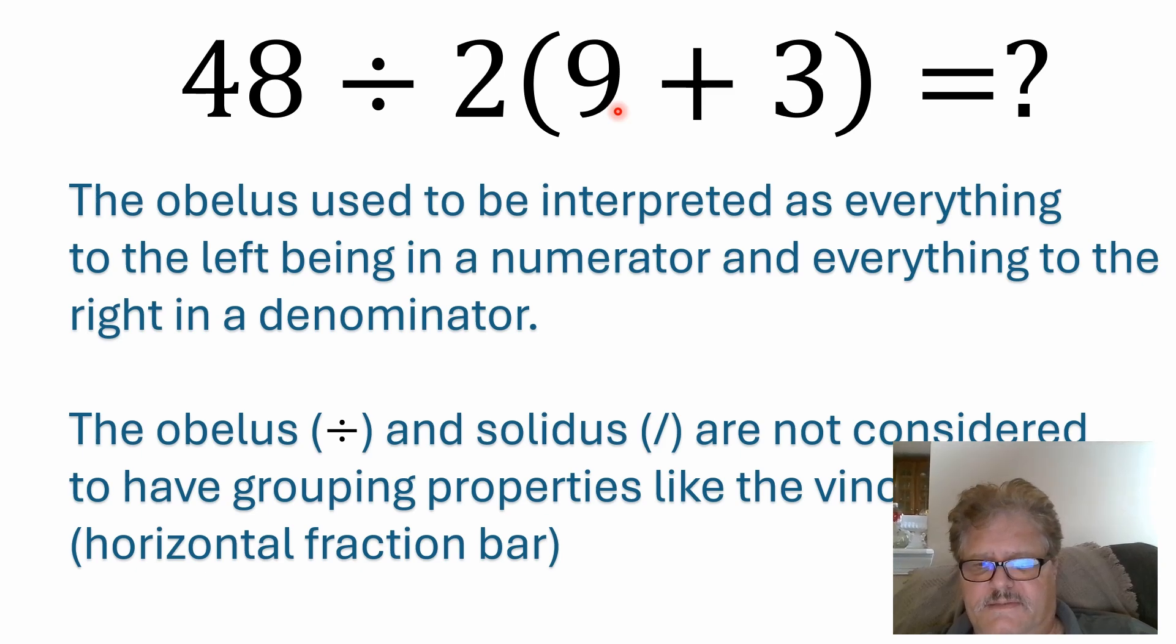You've got basically the three symbols that I'm familiar with: the obelus, which is this symbol. You have the solidus, which would be like a forward slash. And then you have the vinculum. Now, I think I'm blocking it with the webcam here, but the vinculum would be like your horizontal fraction bar. The vinculum does have grouping properties because you can write numbers above the line and below the line. But the way the solidus and the obelus are interpreted, they're really not considered to have grouping properties. They're acting on the number immediately to the left and the number immediately to the right. So the way it would be interpreted today would be 48 divided by 2 would be your division.